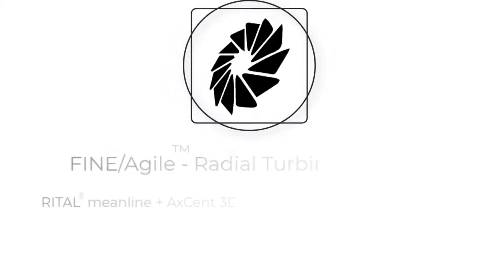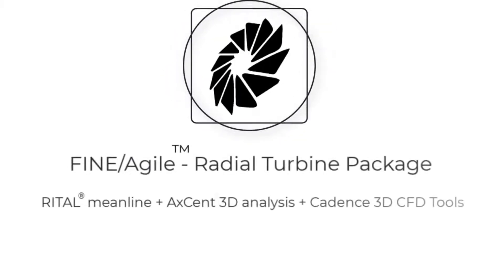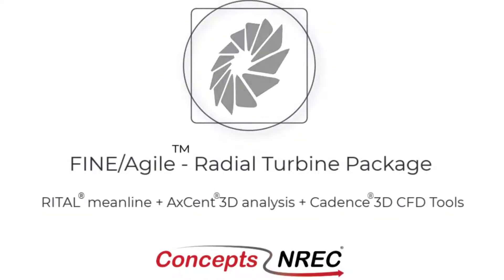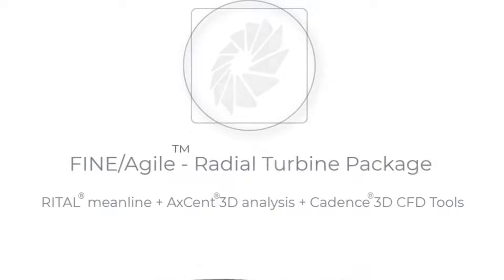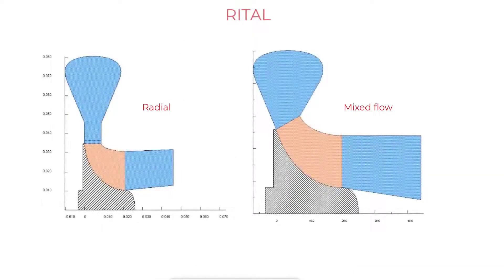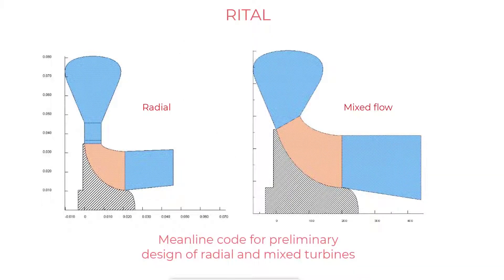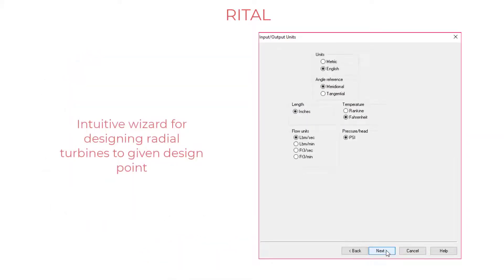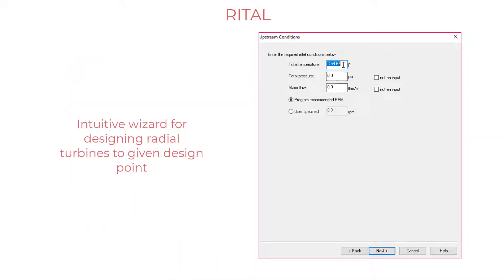Let's have a look at our solution for radial turbine design. Starting with the 1D meanline design and analysis tool, Rital, an intuitive wizard will guide you through the design process, starting with a minimum number of input parameters.